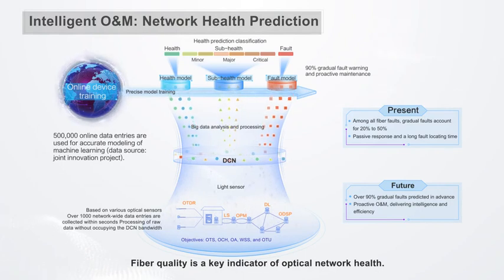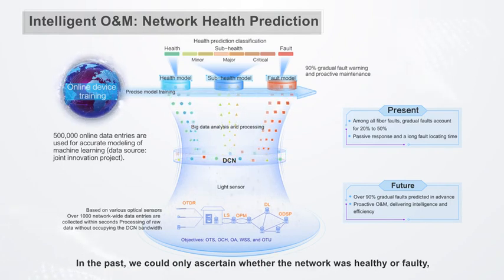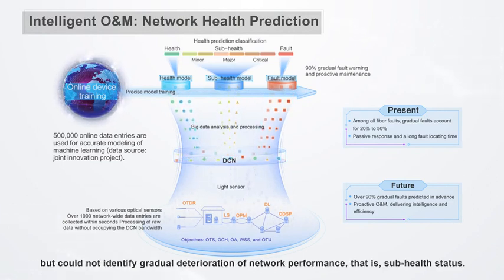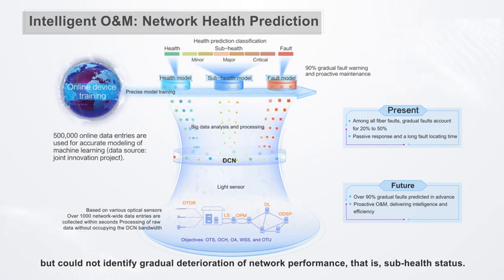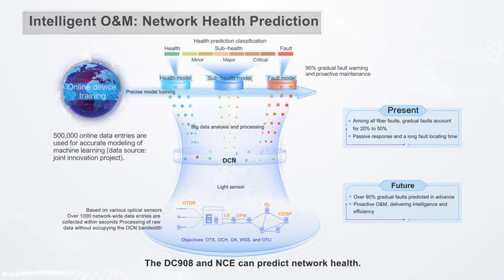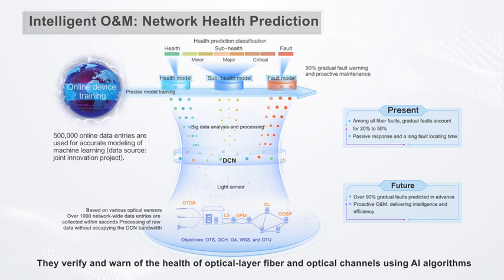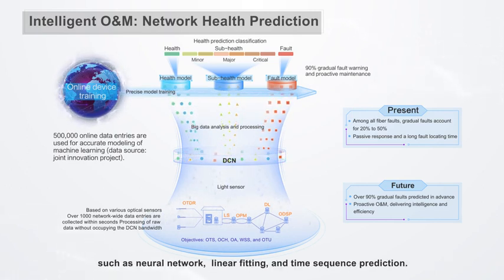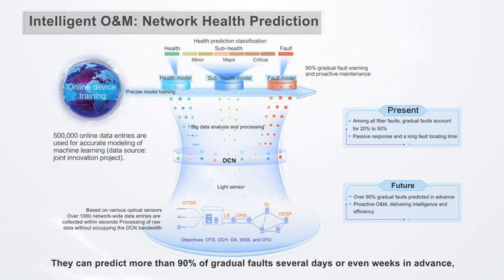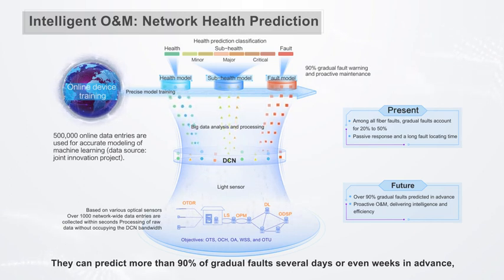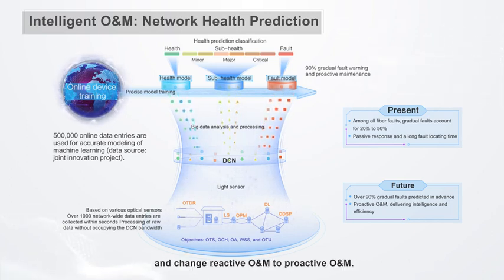Fiber quality is a key indicator of optical network health. In the past, we could only determine whether the network was healthy or faulty, but could not identify gradual deterioration of network performance — that is, sub-health status. The DC908 and NCE can predict network health. They verify and warn of the health of optical layer fiber and optical channels using AI algorithms such as neural networks, linear regression, and time sequence prediction. They can predict more than 90% of gradual faults several days or even weeks in advance, changing reactive O&M to proactive O&M.